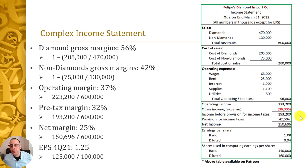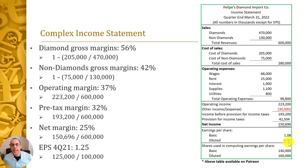Their net income — their accounting profit — is $151 million. Basic earnings per share is $1.08, calculated as net income divided by 140 million shares. Diluted earnings per share is $0.94, calculated as net income divided by 160 million shares. If Felipe issued convertible debt, that person may convert to equity, increasing the share count. If the stock price shoots up, people are more likely to convert their securities to equity; if it stays flat or declines, they are less likely to convert.